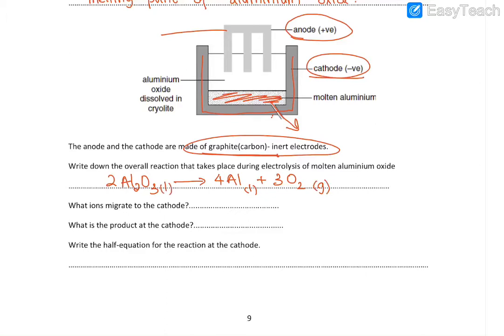Ions that migrate to the cathode will be the cations, so Al³⁺. And product at the cathode is going to be molten aluminum. At the cathode, you have reduction reaction. So you have the gain of electrons.